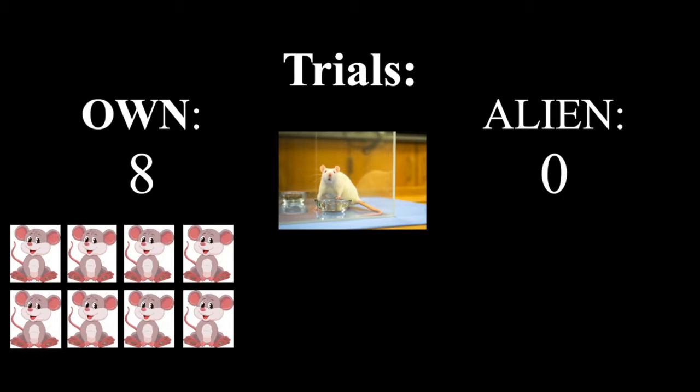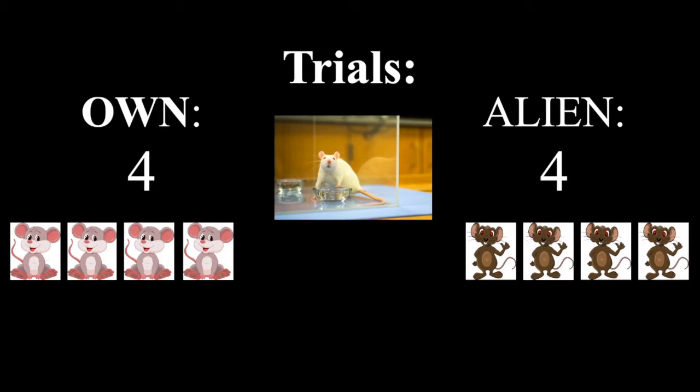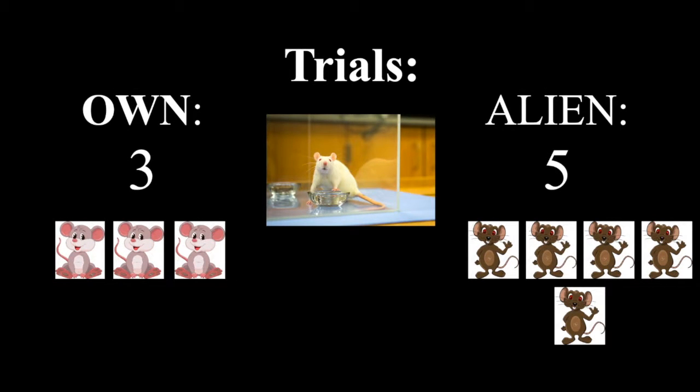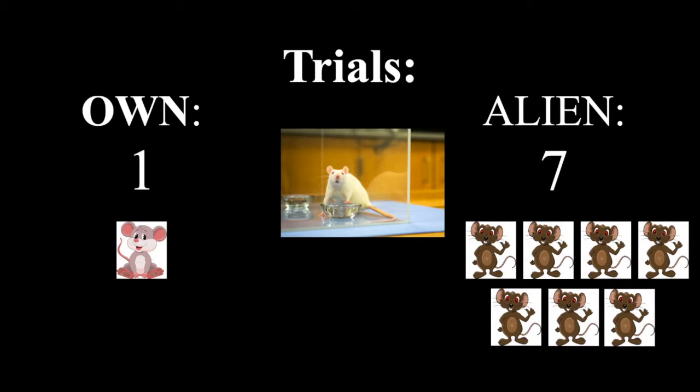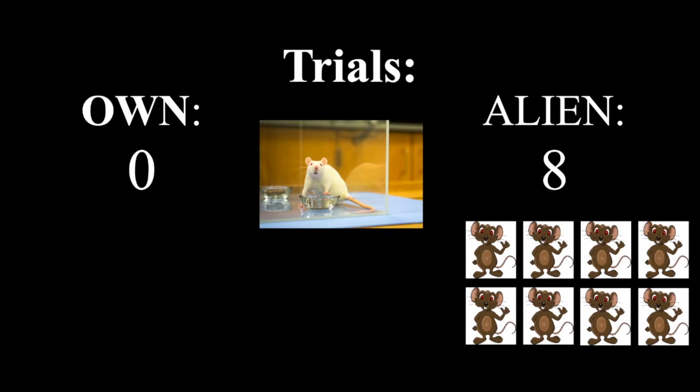The six trials are: 8 own pups and 0 alien pups, 4 own pups and 4 alien pups, 3 own pups and 5 alien pups, 2 own pups and 6 alien pups, 1 own pup and 7 alien pups, and finally, 0 own pups and 8 alien pups. The alien pups are age-matched from different litters of the other mother rats not being tested in that specific trial.